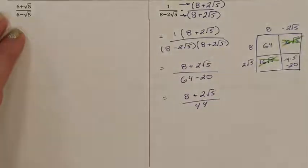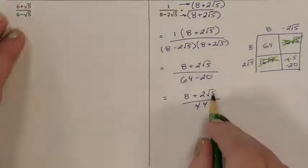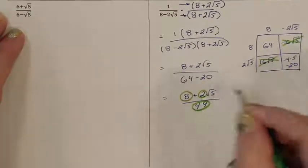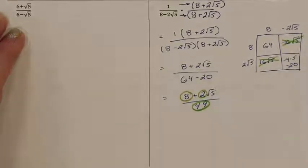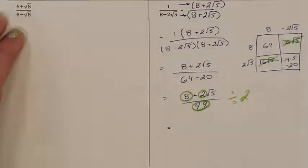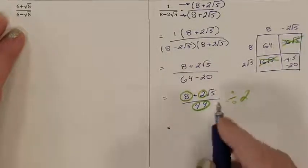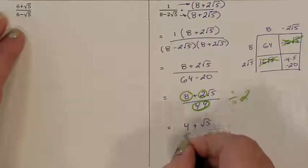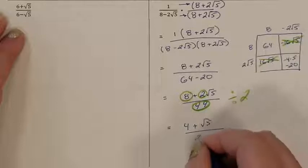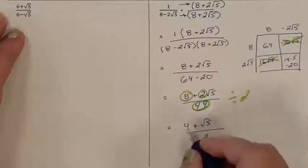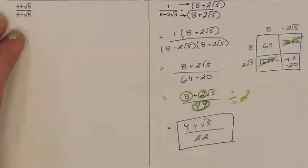Looking at this, I observe that all the outside numbers can be divided by 2. So dividing through: 8 divided by 2 is 4, 2 divided by 2 is 1, so this is 1 root 5, and 44 divided by 2 is 22. My final answer in simplest form is 4 plus root 5 all over 22, and there is no radical in the denominator. This last problem is for you for independent practice.